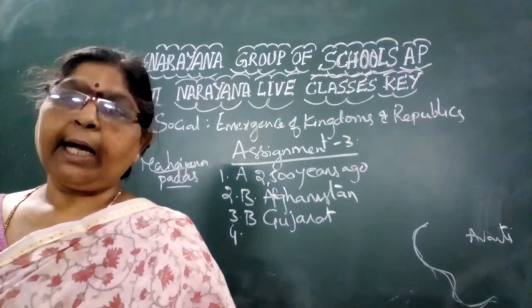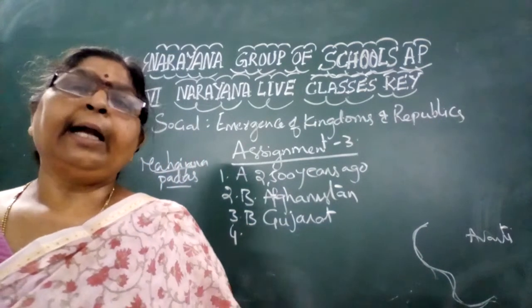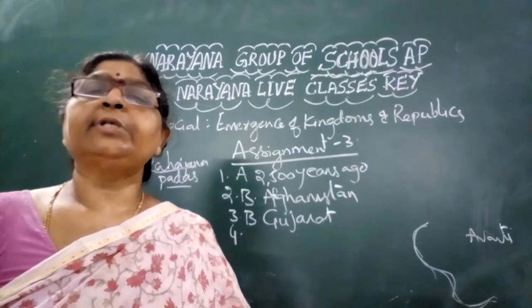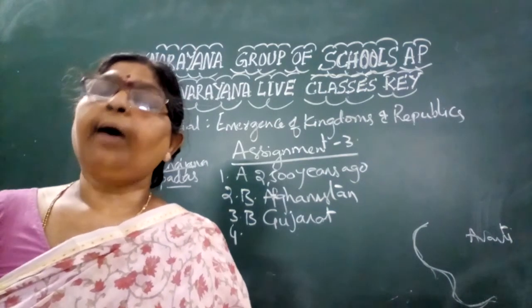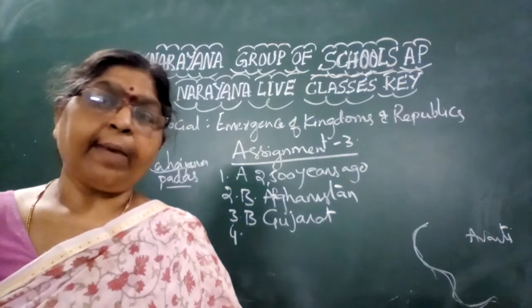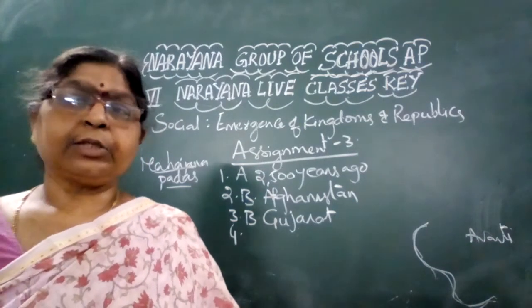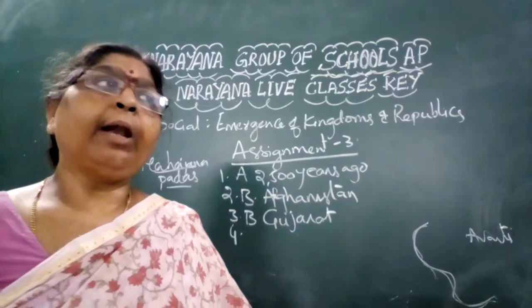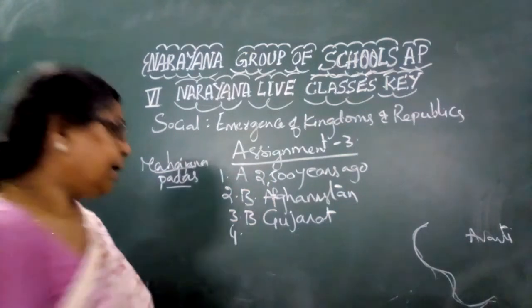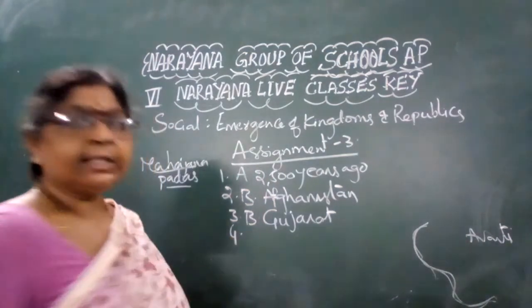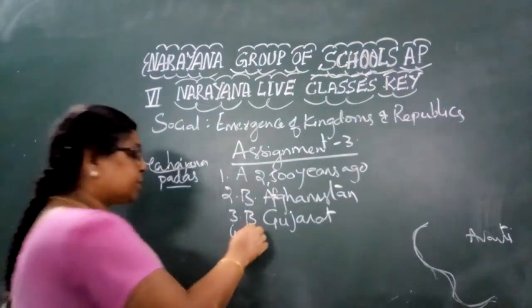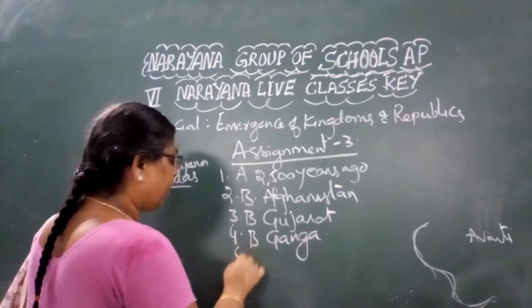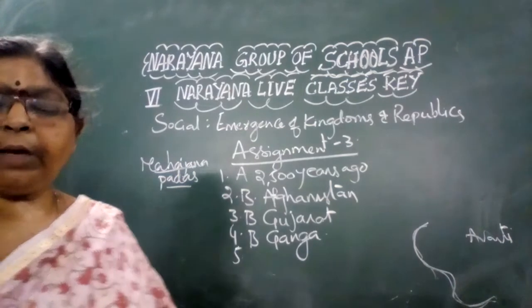Coming to the next aspect: Vajji and Anga. Vajji and Anga developed along a river. Looking at the map, the Vajji and Anga — these two Mahajanapadas — developed along River Ganga. The correct option is Option B: River Ganga.